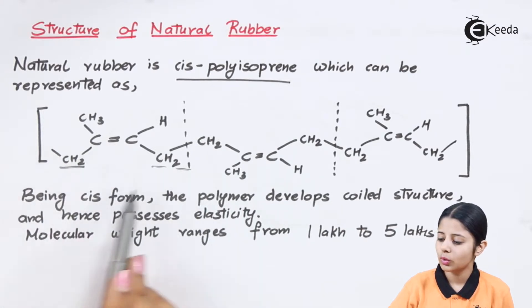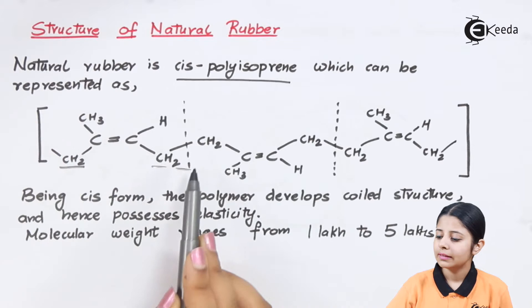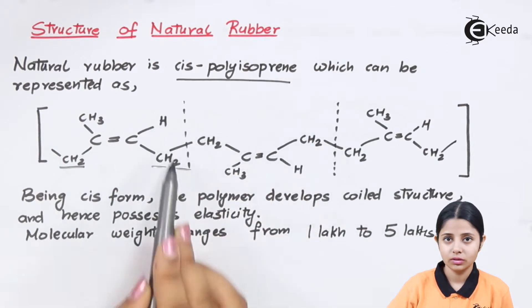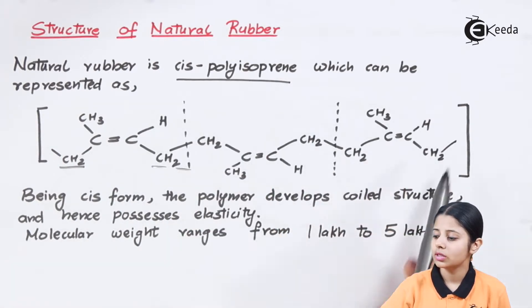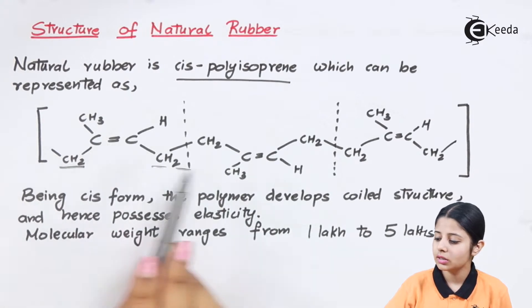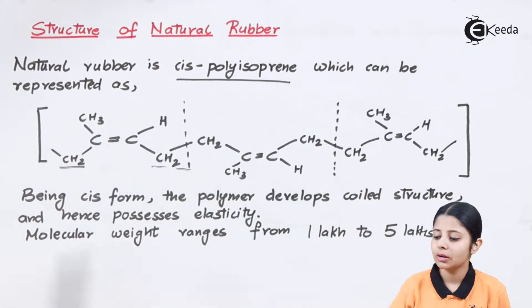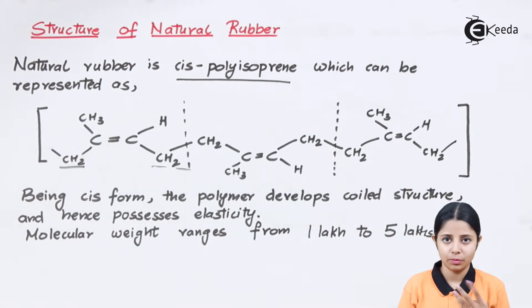Where are the three monomers? The first one is here, the second one is here, and the third one is here. These three monomers are combining together to form the polymer which is my natural rubber.